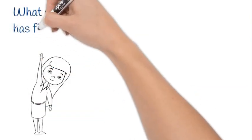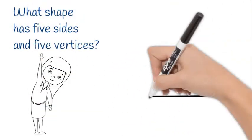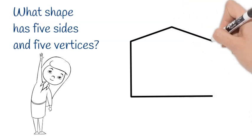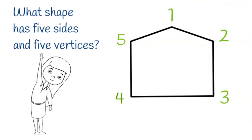Ready for a question? What shape has five sides and five vertices? One, two, three, four, five. A pentagon.